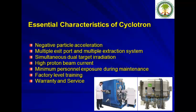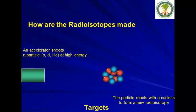When buying a cyclotron, essential characteristics include: negative particle acceleration, multiple exit ports and extraction systems, simultaneous dual target irradiation, high proton beam current for higher yield, and minimum personnel exposure during maintenance. You must also stress factory-level training for your staff. Pay careful attention to warranty and service terms, since spare parts and consumables may be excluded — be very careful about these details.